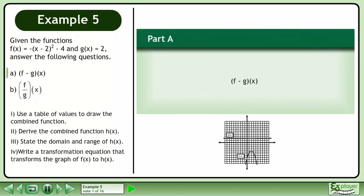Given the functions f(x) = -(x-2)² - 4 and g(x) = 2, answer the following questions. In Part A, we'll find the difference of functions f and g.